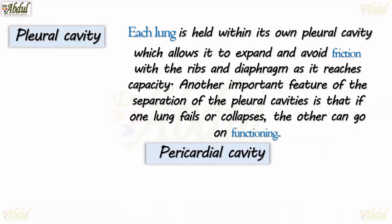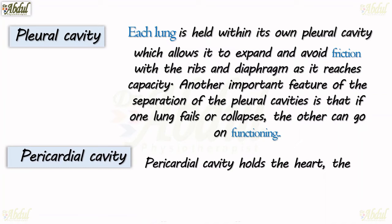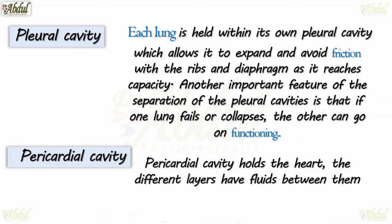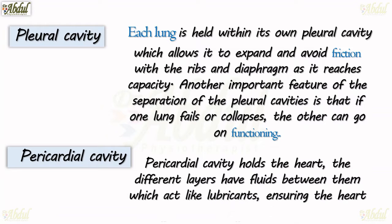The second subdivision of the thoracic cavity is the pericardial cavity. The pericardial cavity holds the heart, and the different layers around it have fluid between them which acts like a lubricant, ensuring the heart pumps without friction. So pleural cavity and pericardial cavity comprise the thoracic cavity.